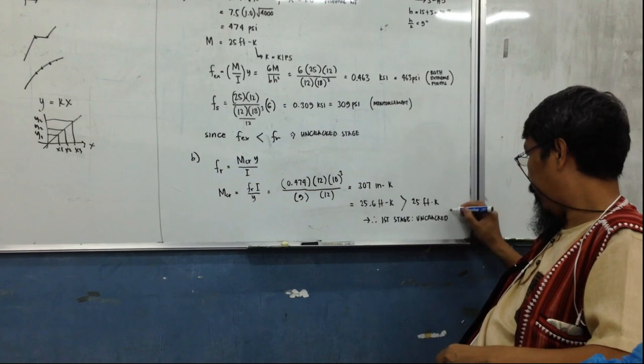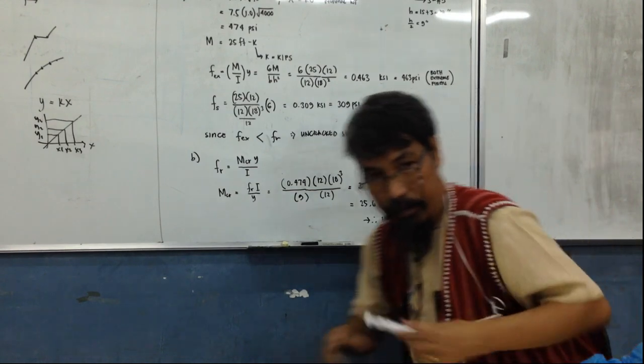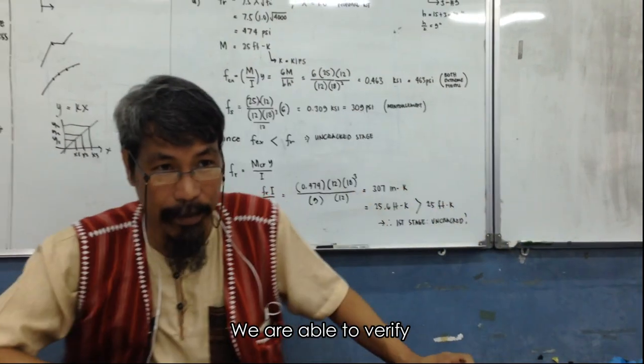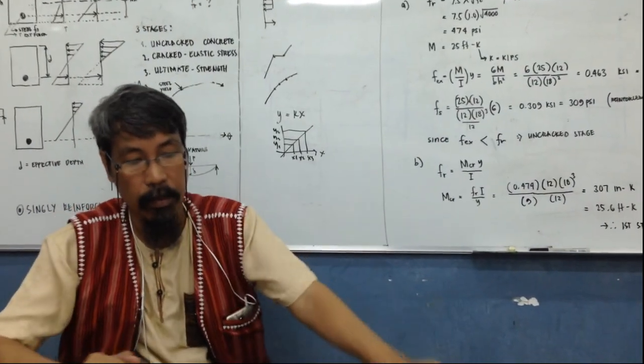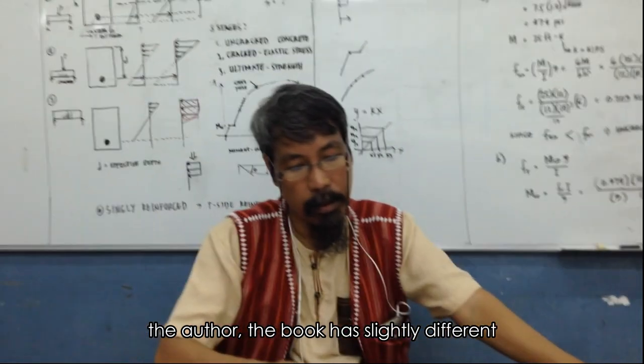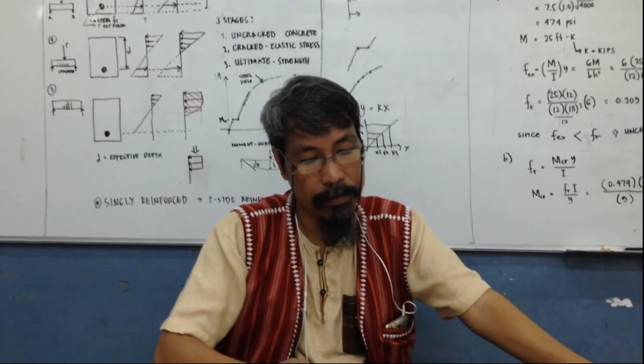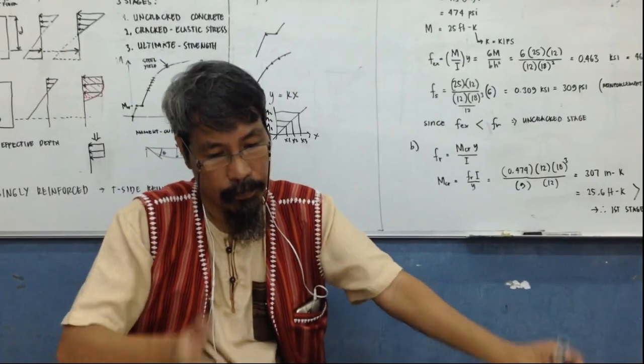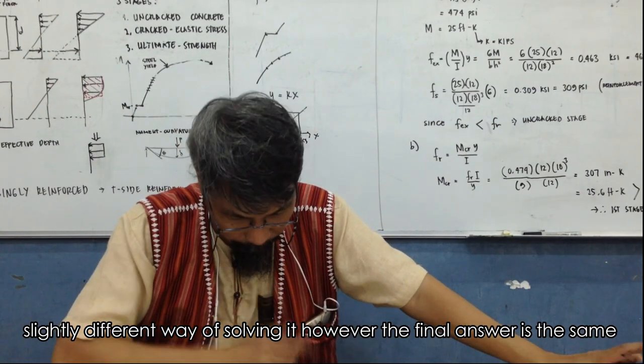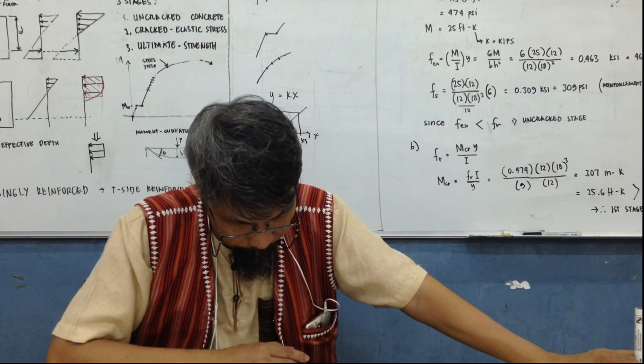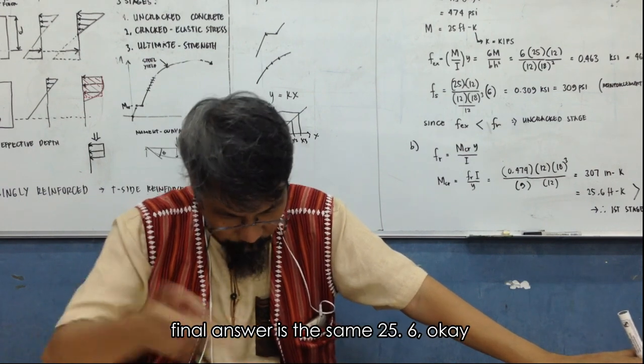So this is, so let us put it in here: 25.6 K is greater than the given load which is 25 K. So again, we can say therefore that we are first stage, uncracked. Okay, we are able to verify. Okay, that's how we. So the author, we move has a slightly different, slightly different way of solving it. However, the final answer is the same. Final answer is the same, 25.6. Okay.